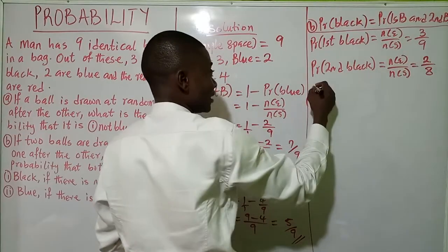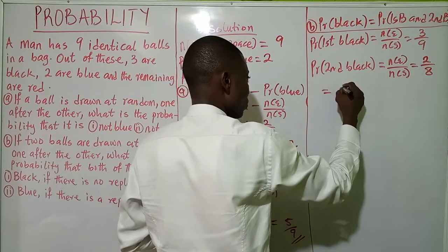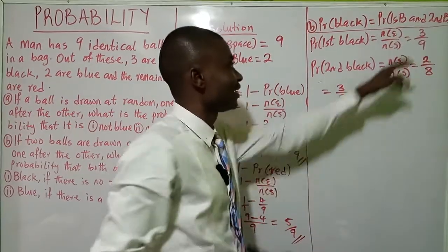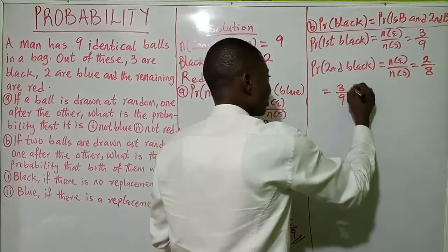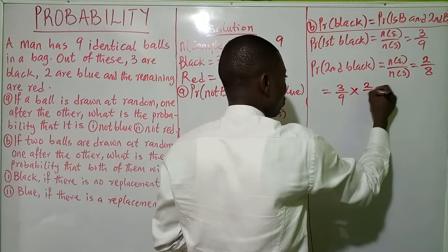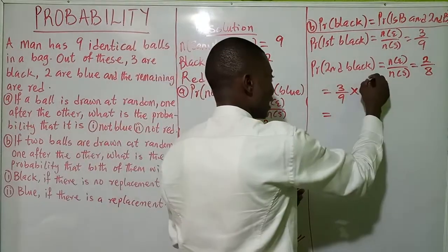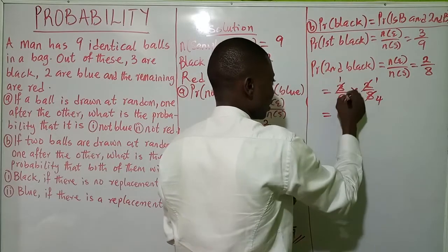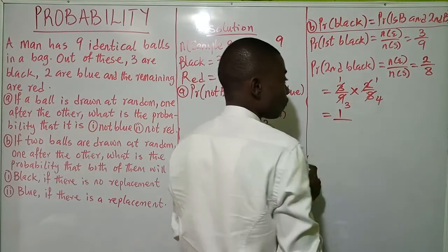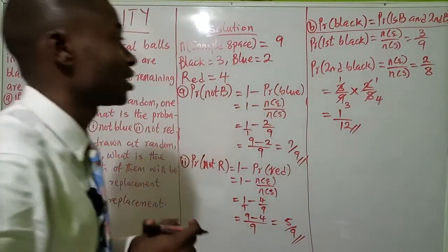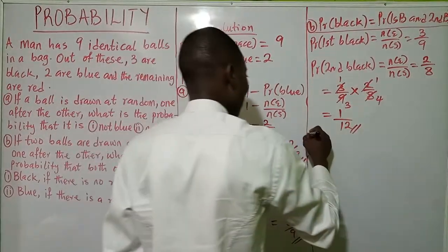Going back to combine them: probability of both black equals probability of first black times probability of second black, which is 3/9 times 2/8. You can simplify — 2 divides into 2 once and into 8 four times; 3 divides into 3 once and into 9 three times — giving 1/3 times 1/4, which equals 1/12. So the probability that both balls drawn are black with no replacement is 1/12.